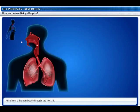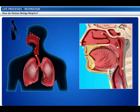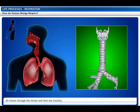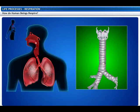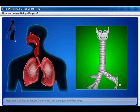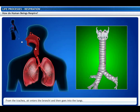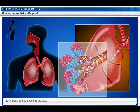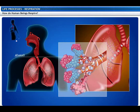In human beings, air is drawn into the body through the nostrils, which are lined with fine hairs and mucus that filter the air. The air travels through the throat and then through rings of cartilage called the trachea, which ensures the air passage does not collapse. From here, air passes through the bronchi before entering the lungs. The bronchi branch into smaller tubes, and at the end of each bronchus are balloon-like structures called alveoli, which provide a surface for the exchange of oxygen and carbon dioxide. The walls of the alveoli contain a massive network of blood vessels.